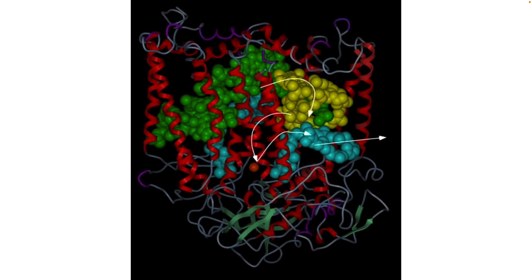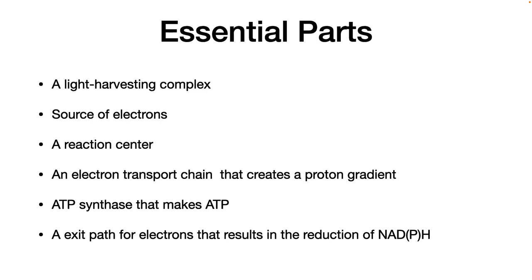This figure shows the actual movement of electrons through the reaction center. Green is the special pair of chlorophylls. Yellow is the bacterial feophyton. Brown is the iron. And blue is the quinone. To summarize, the essential parts of the photosynthetic system are a light harvesting complex that collects light for photosynthesis by use of photopigments. A source of electrons. A reaction center, where the light collects and causes the excitation of a bacterial chlorophyll molecule resulting in the ejection of an excited electron. An electron transport chain that spins the energy of this excited electron to create a proton gradient. ATP synthase that makes ATP. And finally, an exit pathway for the electrons that results in the reduction of NADP to NADPH.